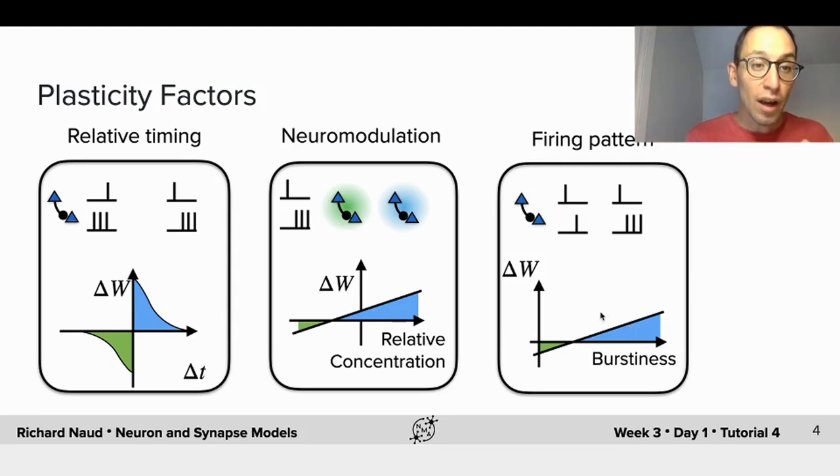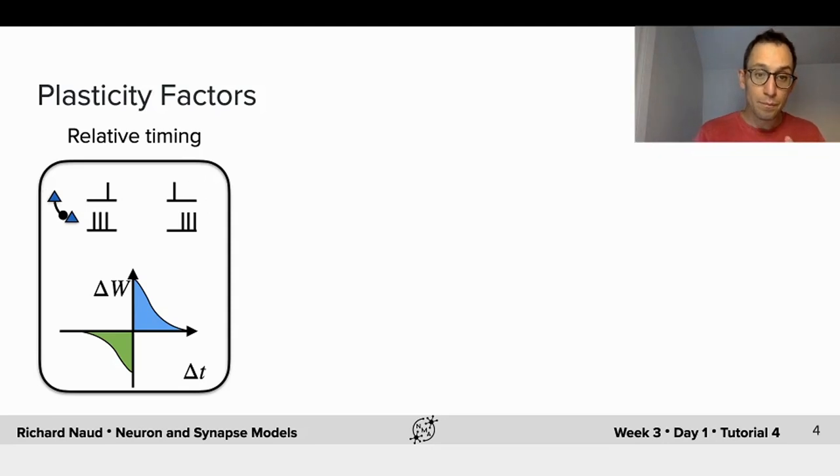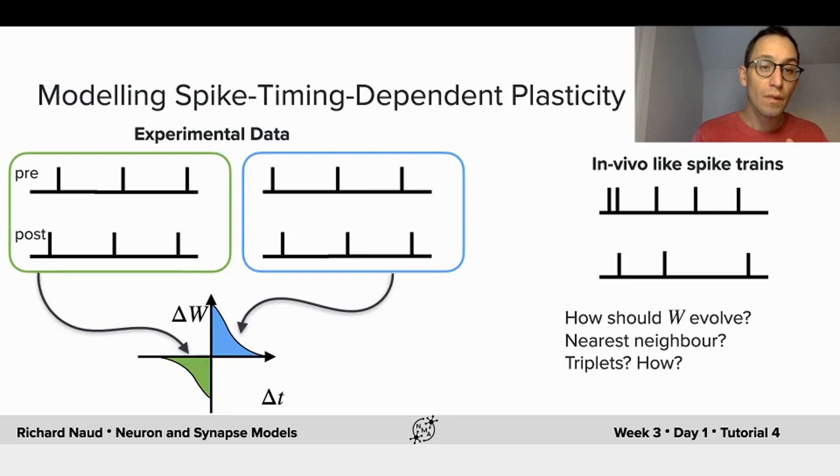Now, in this lecture, I will focus on relative timing. Our knowledge of plasticity due to relative timing comes from experiments that look like this. We pair a train of action potential stimulated in the presynaptic neuron and a train of action potential with a postsynaptic neuron. And we control the relative timing between the pre and the post spikes.